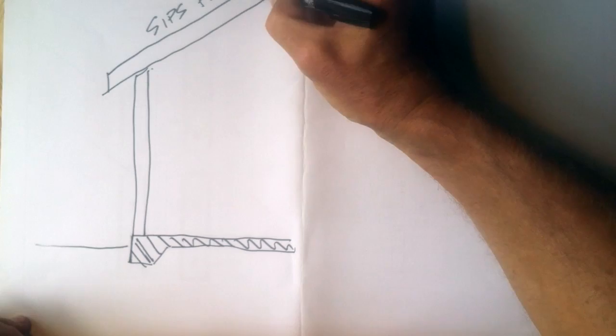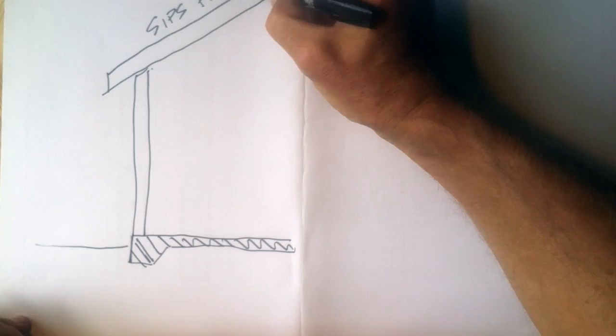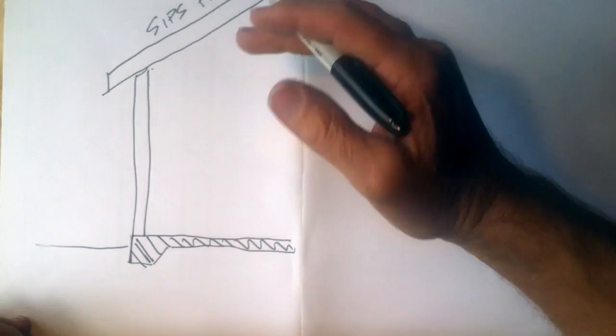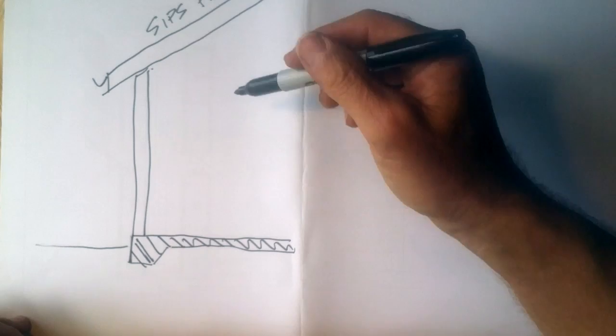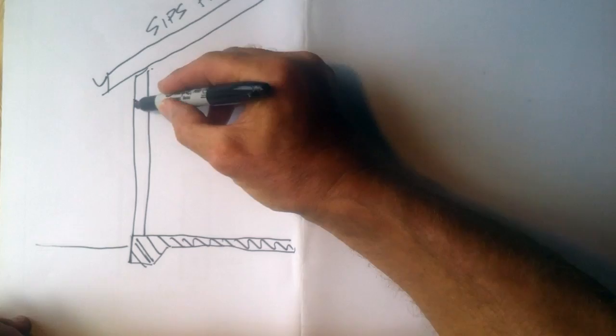SIPS stands for structural insulated panel system, and you can look that up on our website, but it's an insulated roof, and then let's add the gutter here. Now the basics of passive solar, if you remember from last week, let's add a window in here, which we have full height windows on the north wall of the greeny flat.